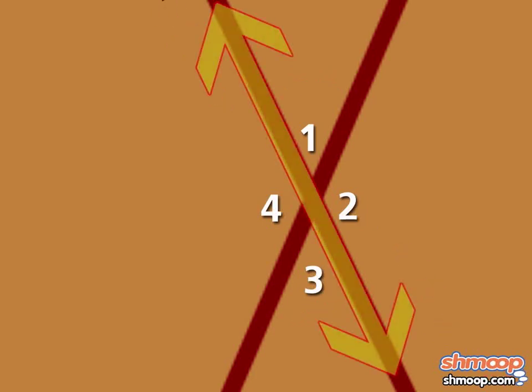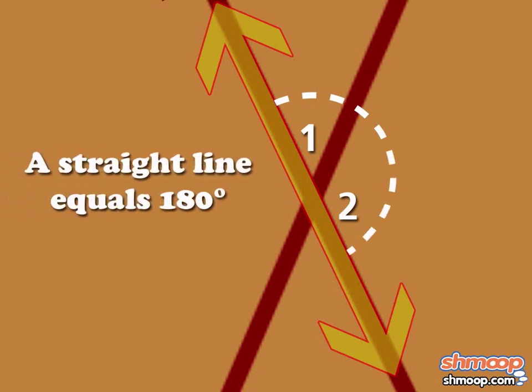Okay, to start, let's look at Mr. Thimbleton's bungee cord. Since it's a straight line, we know it makes a 180-degree angle.